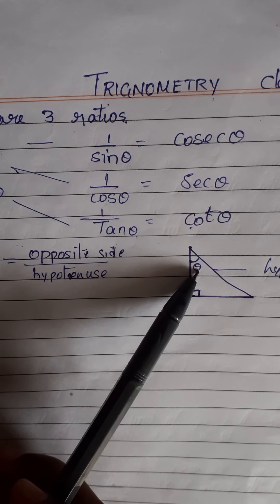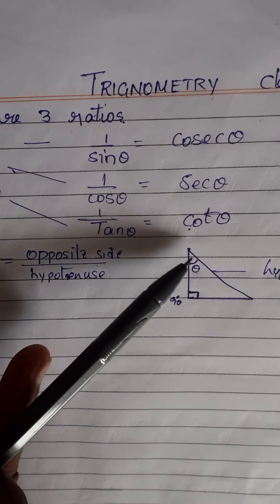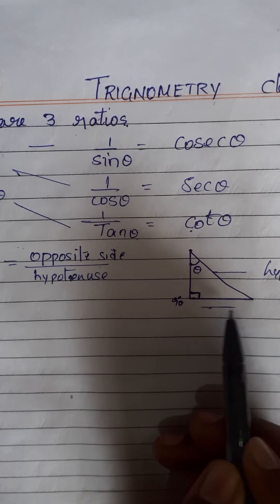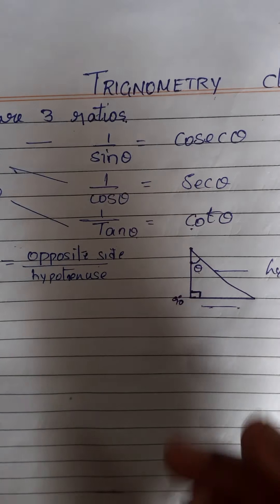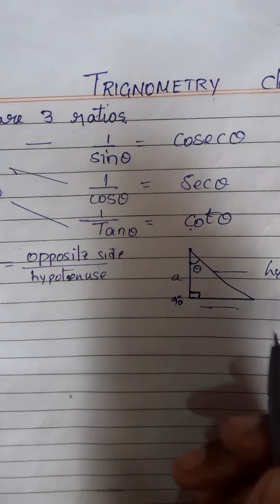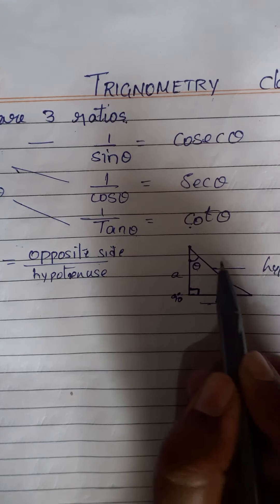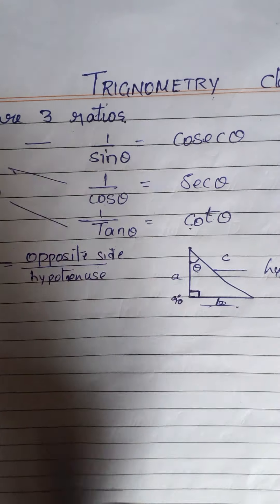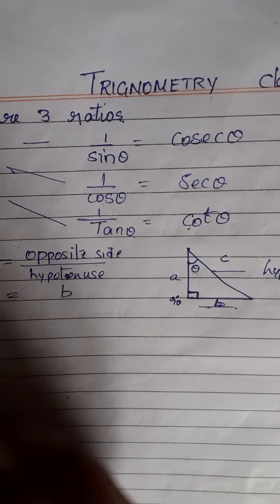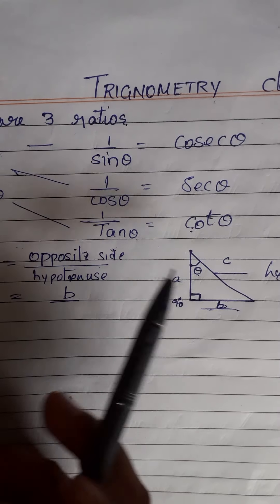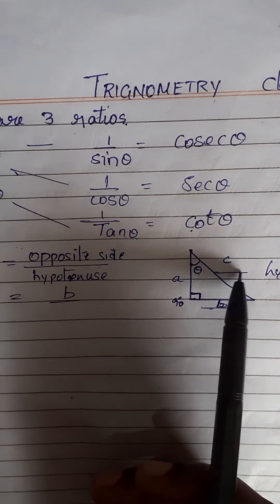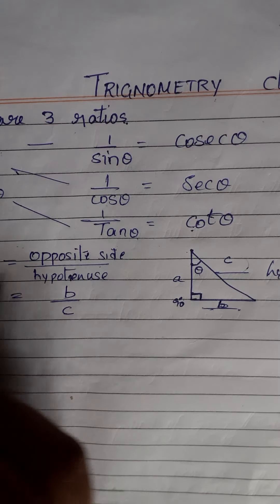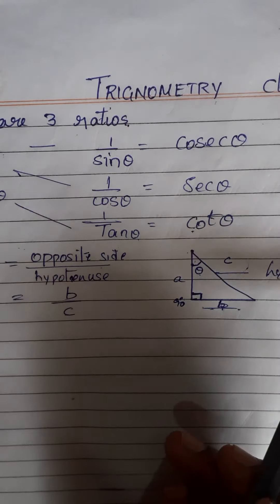So, this is theta. Tan theta — the opposite side is here. For this triangle, take vertices A, B, C. For angle theta, the opposite side is B, and the hypotenuse — the longest side — is C. So sine theta equals opposite side by hypotenuse, which is B by C.